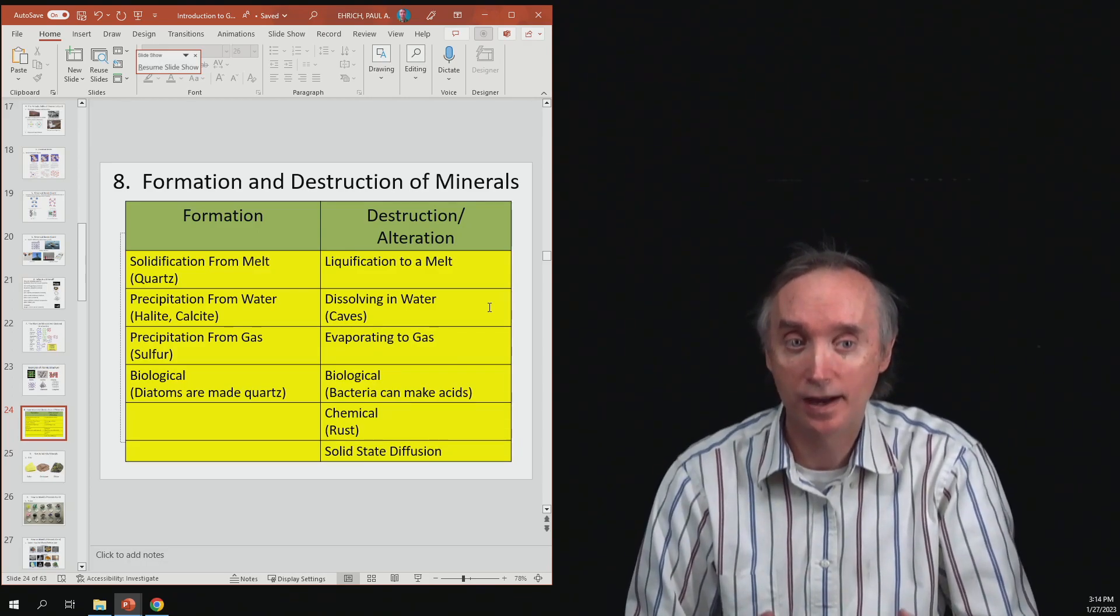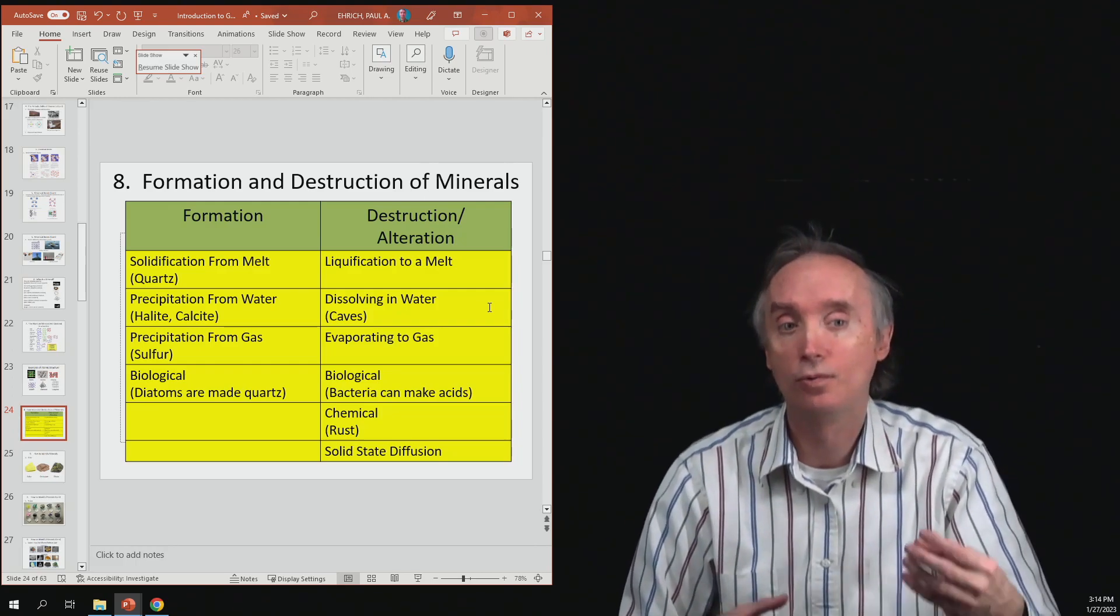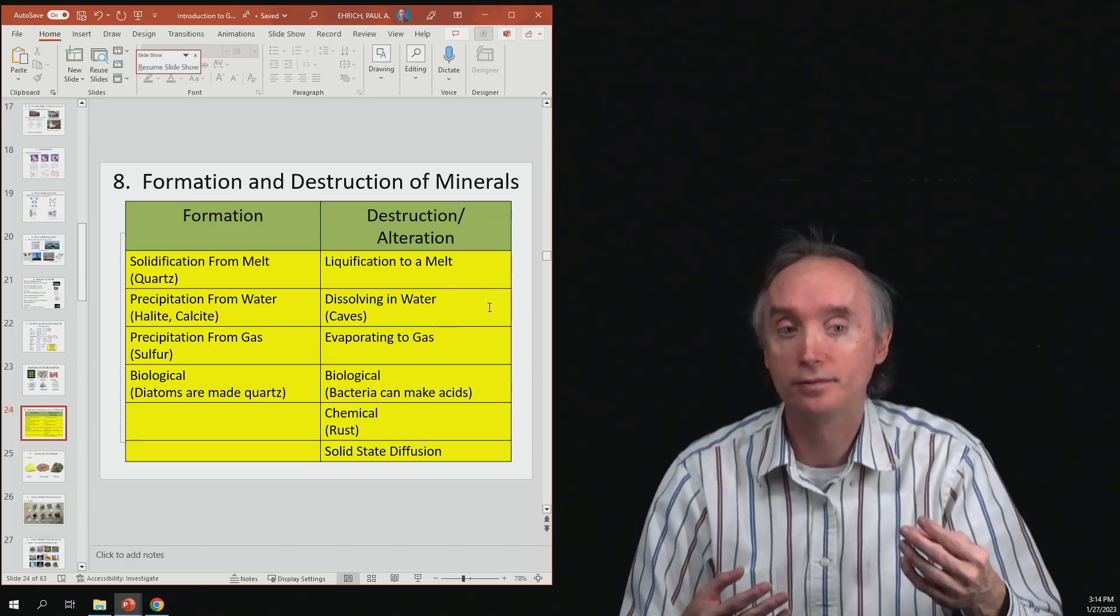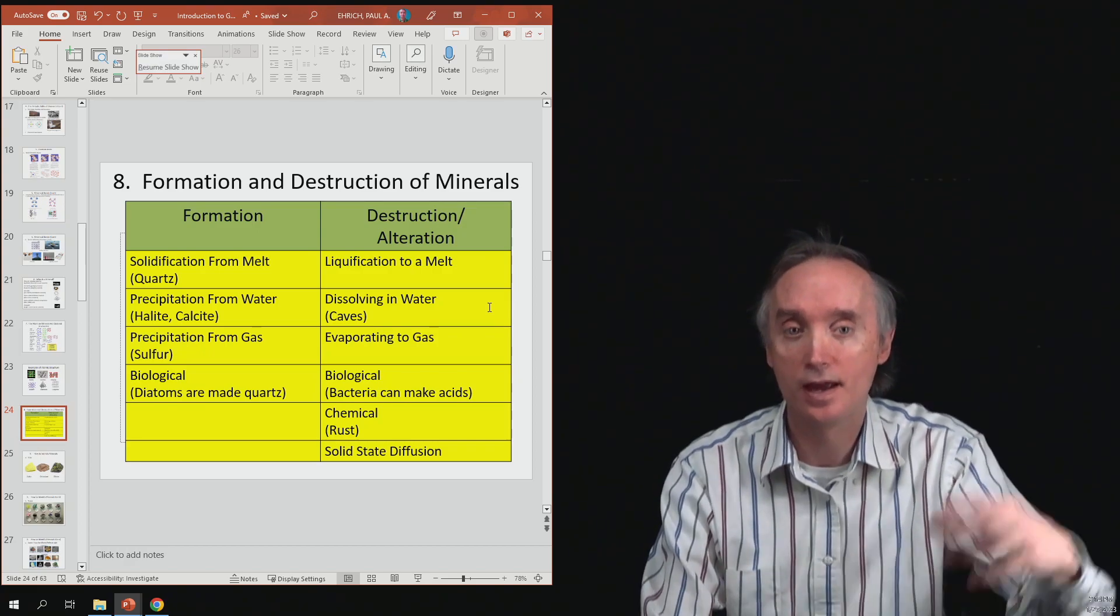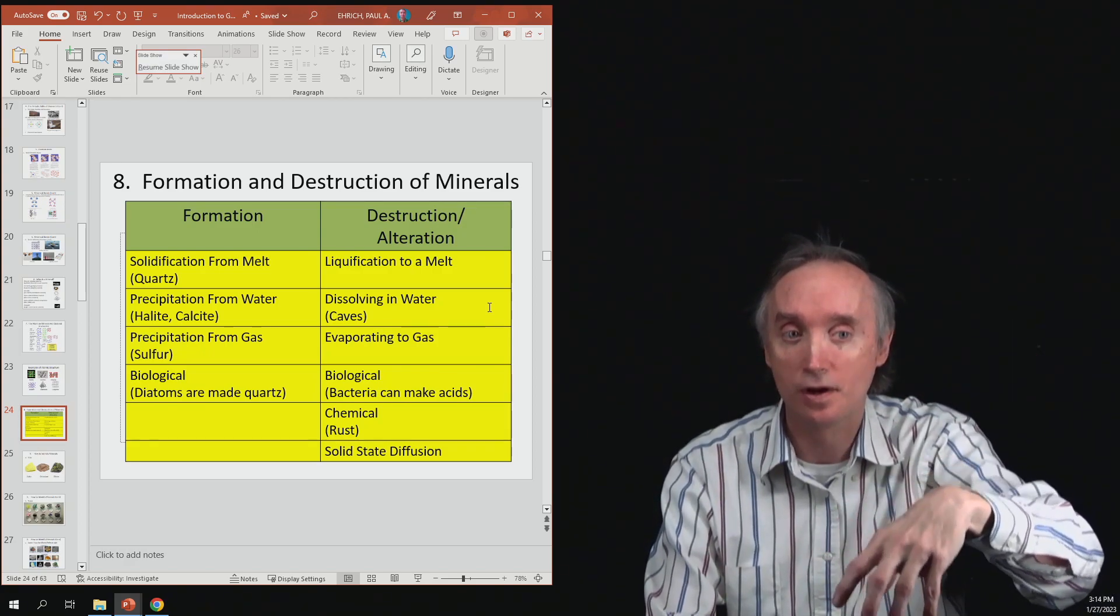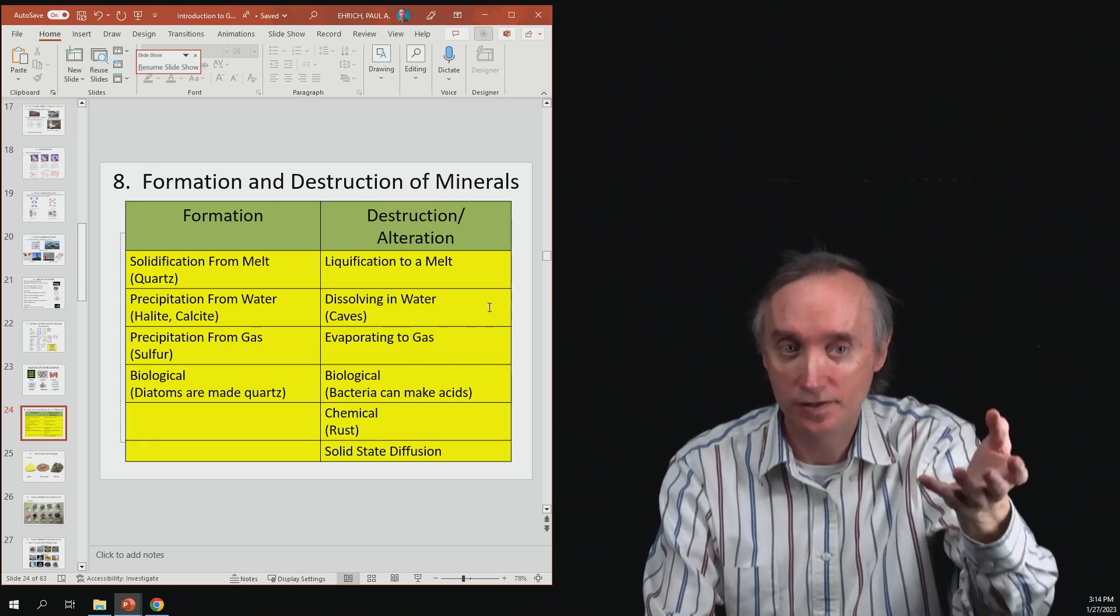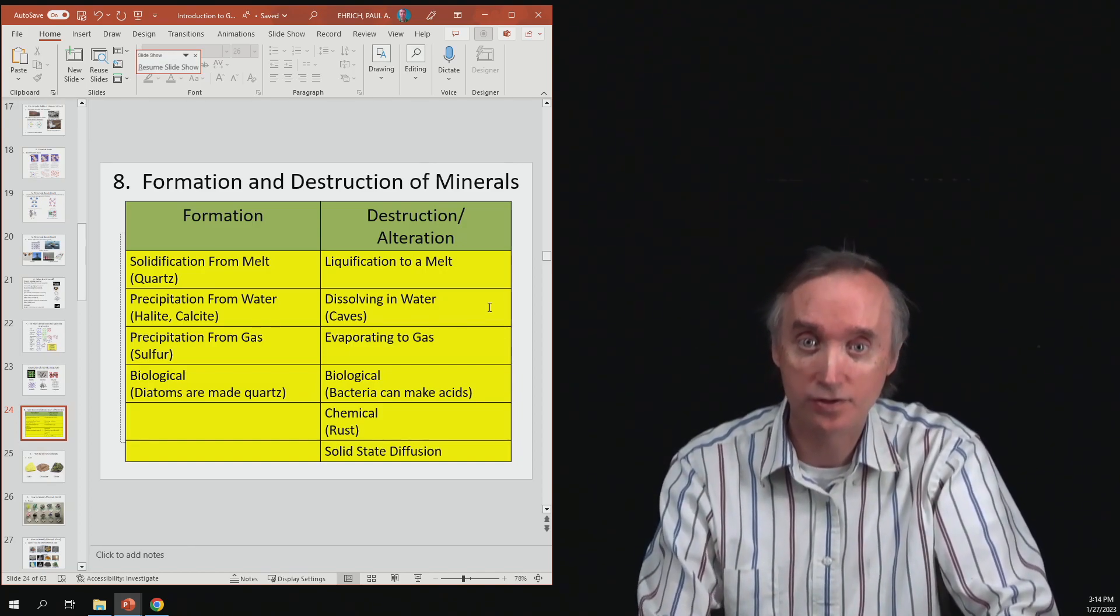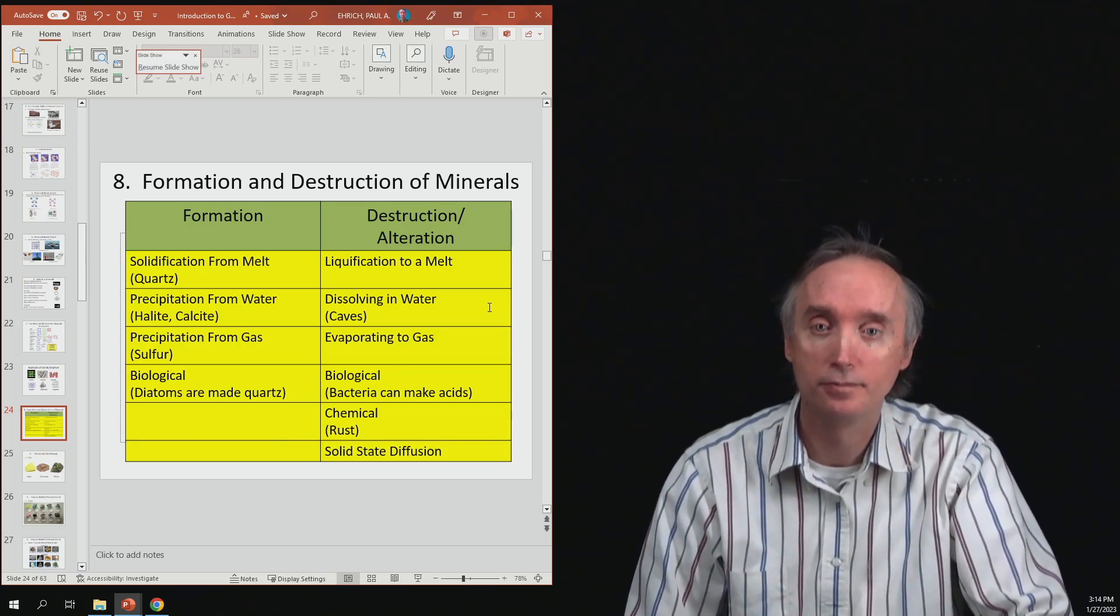and it gets that acid, it becomes acidic, again, from carbon dioxide. So, rainwater mixes with carbon dioxide to make an acid, and then that acid, as it percolates through limestone, dissolves the calcium carbonate, and then what you're left with is basically holes in the ground, which we call caves. Okay, so notice that a mineral can be created, and it can also be destroyed by water.